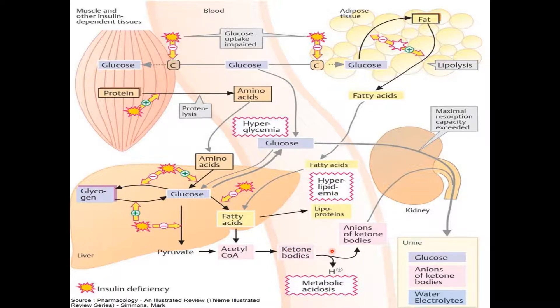These ketones are acidic and lose a proton in the bloodstream, leading to a metabolic acidosis. In the liver, with a lack of insulin, glycogen is broken down into glucose, and gluconeogenesis is ramped up, leading to worsening hyperglycemia.